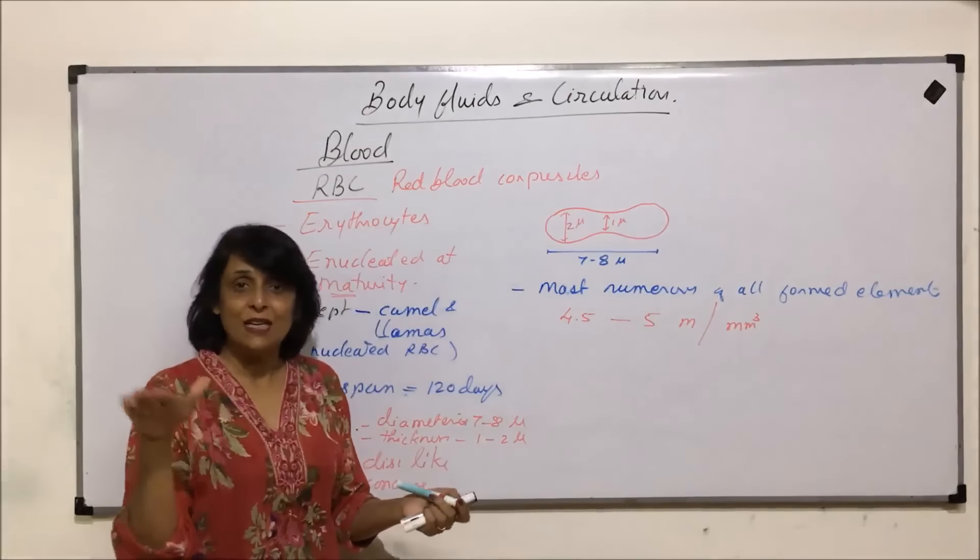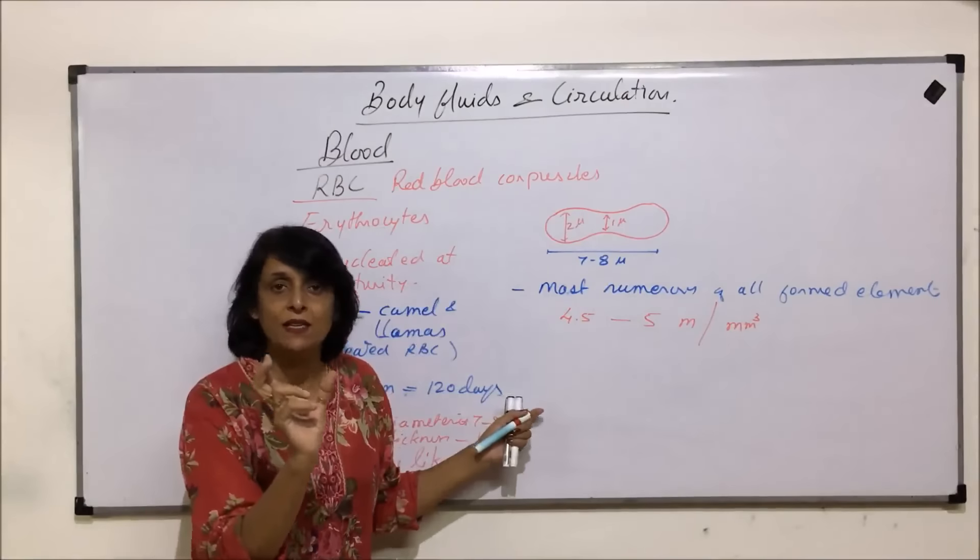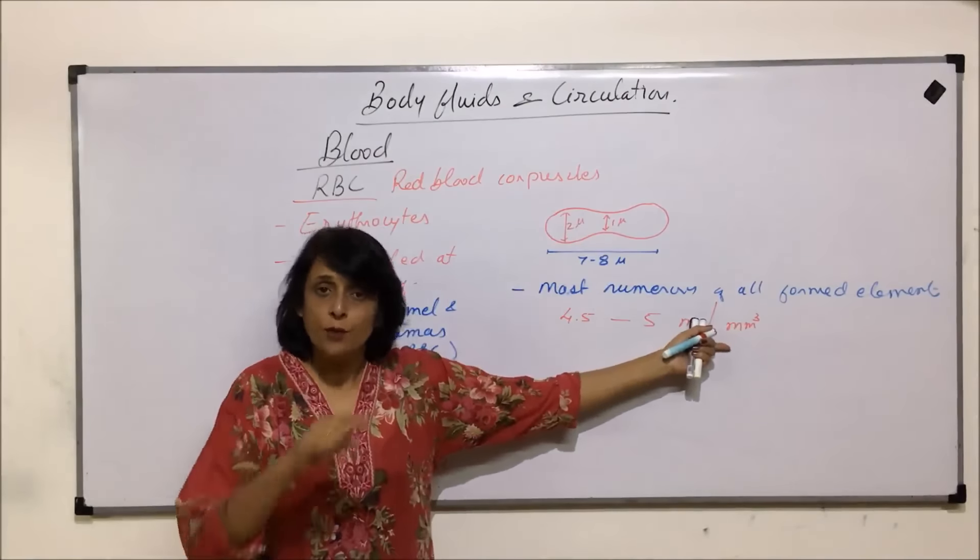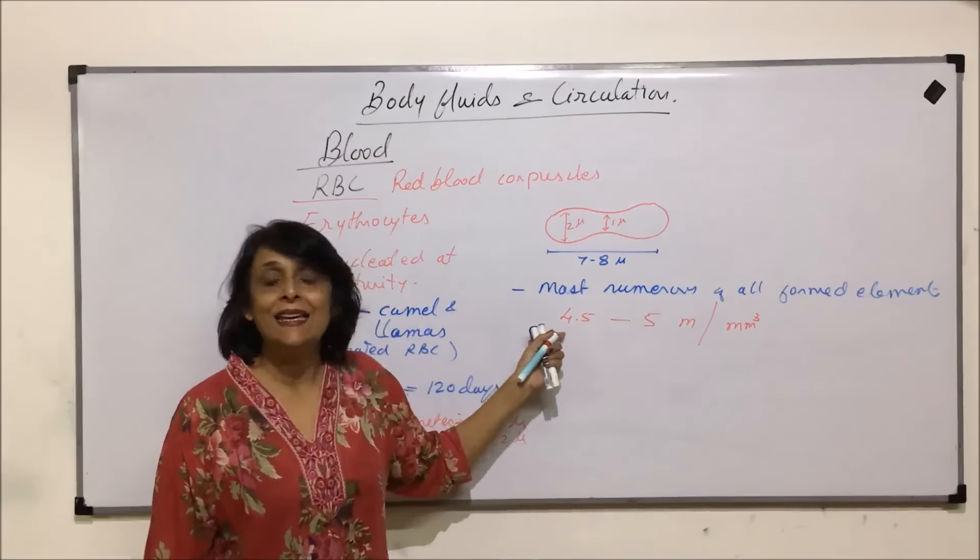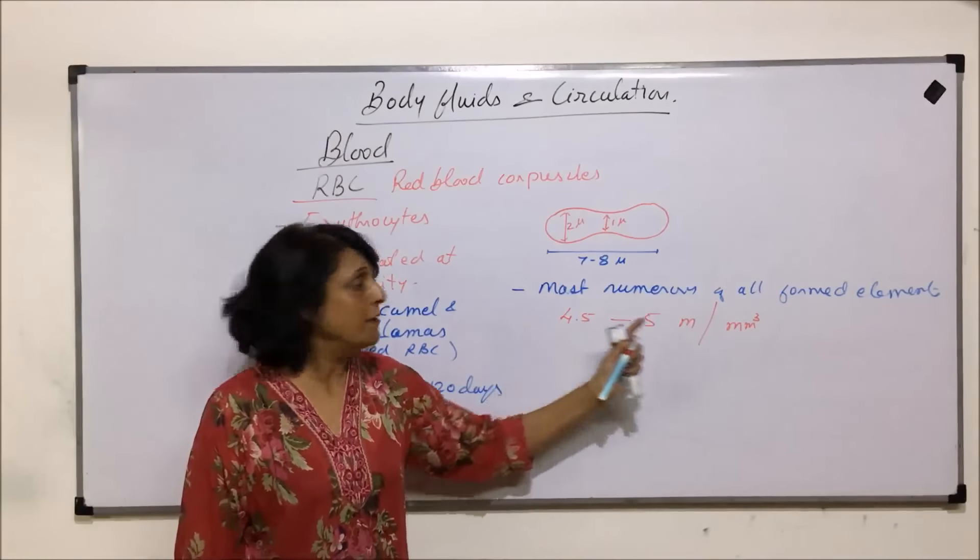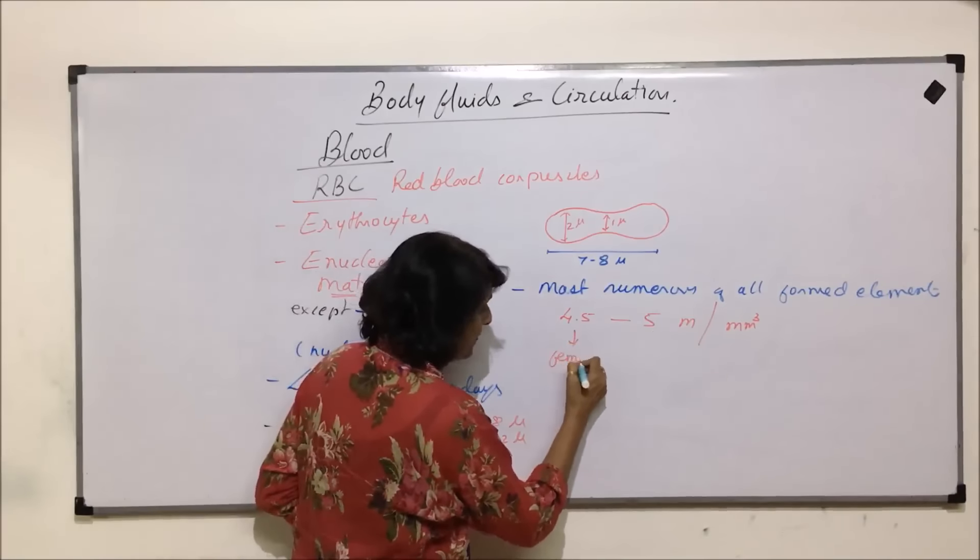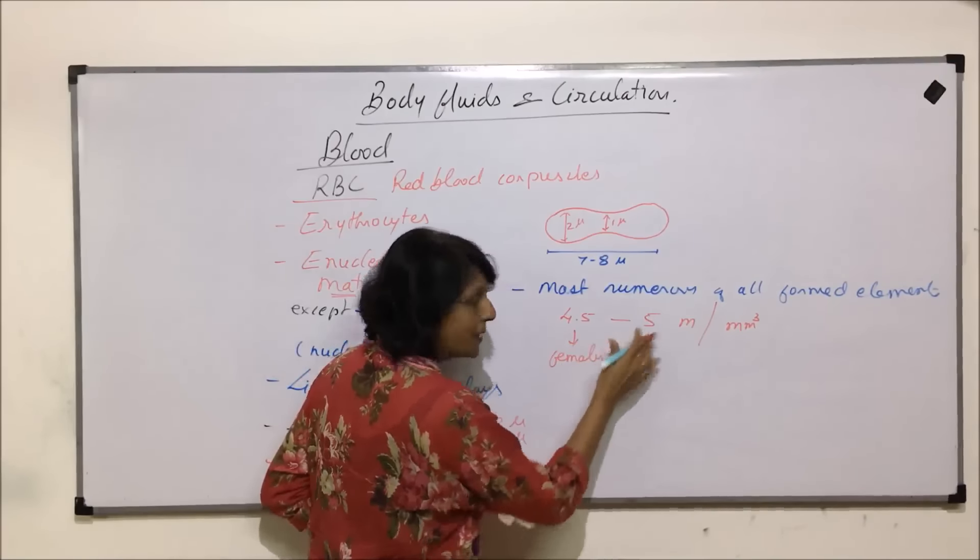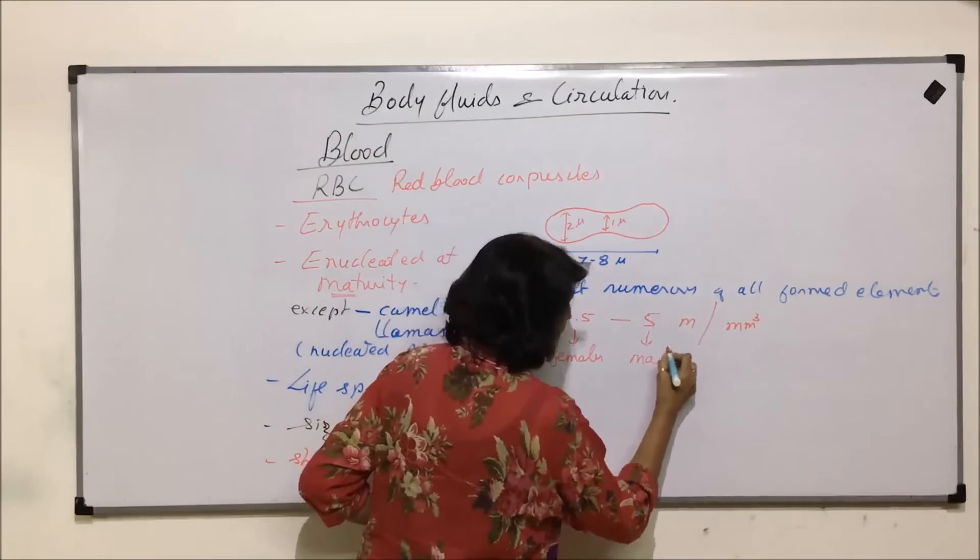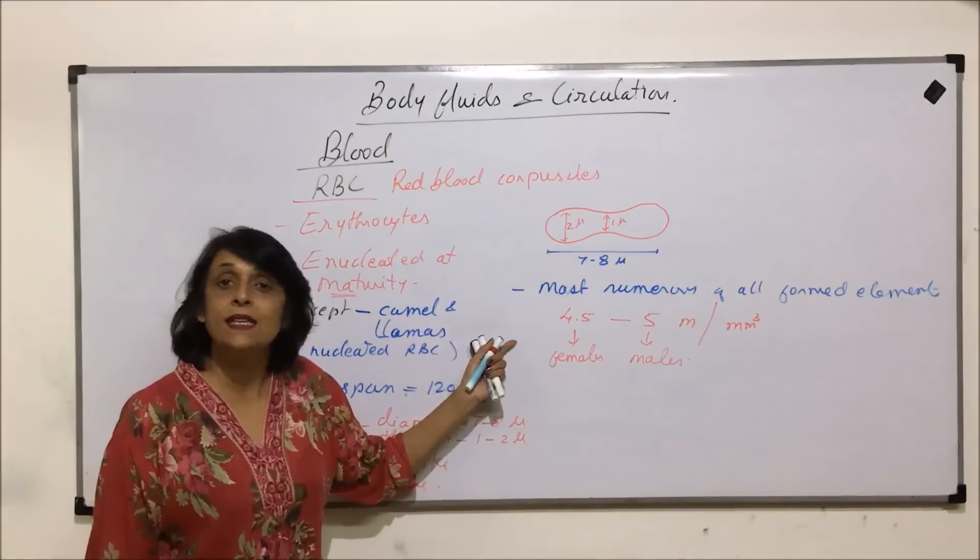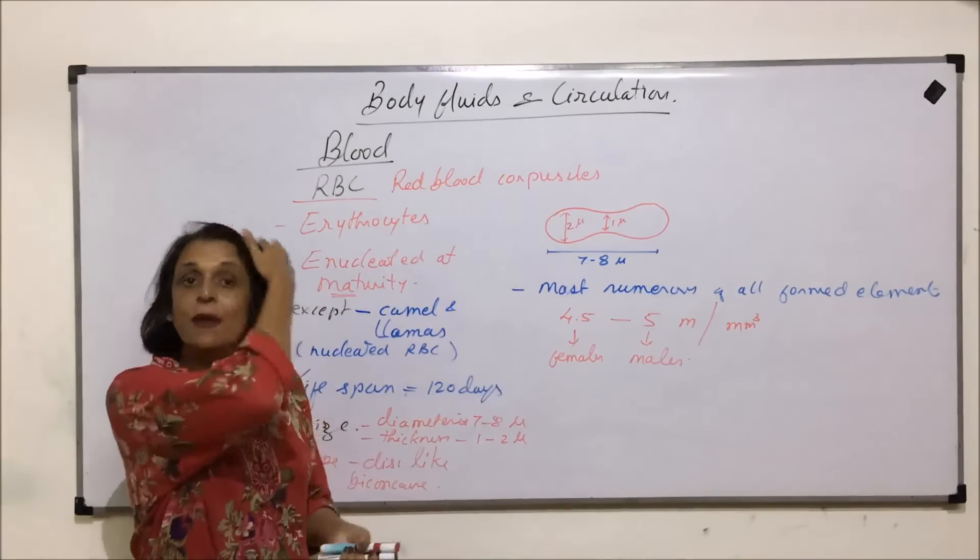The number is 4.5 to 5 million per cubic millimeter. When we take a smear and spread that blood and take the complete area as cubic millimeter, then the number is 4.5 to 5 million. This is in females and this approximate number is in males. The number of RBCs is different in males and females.